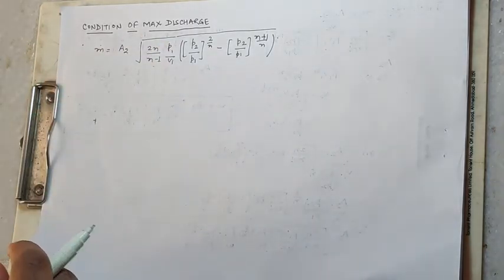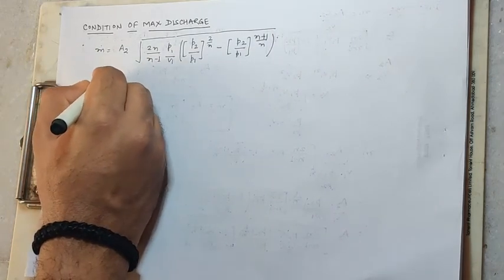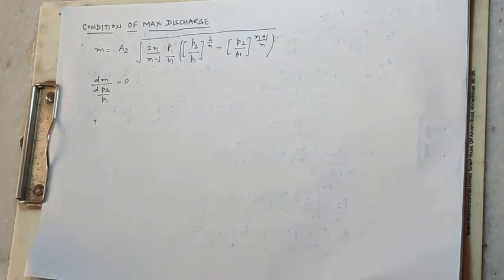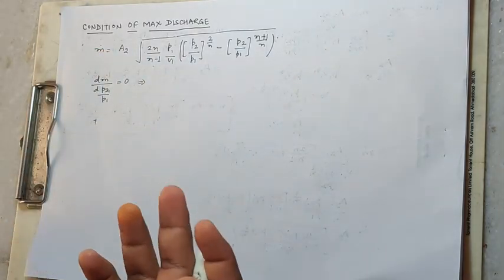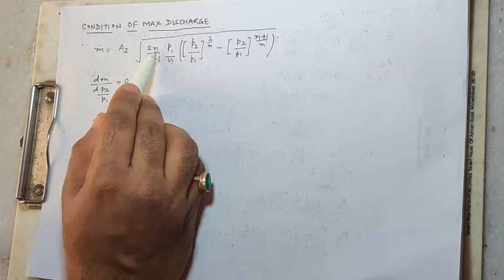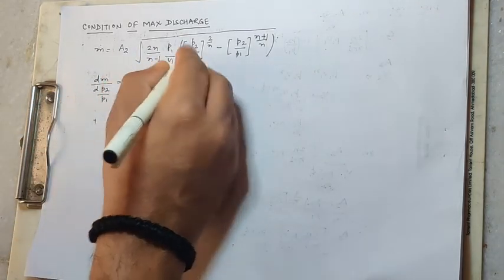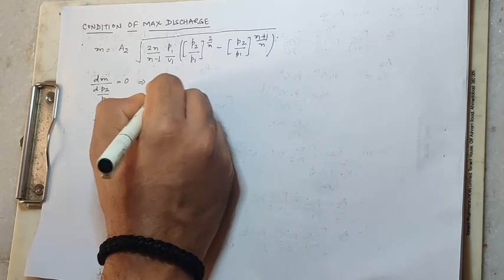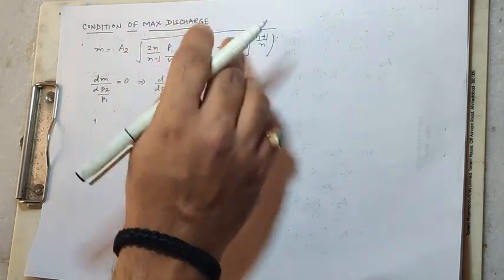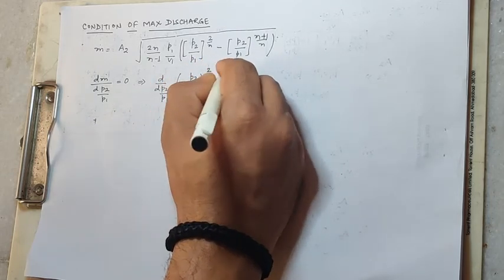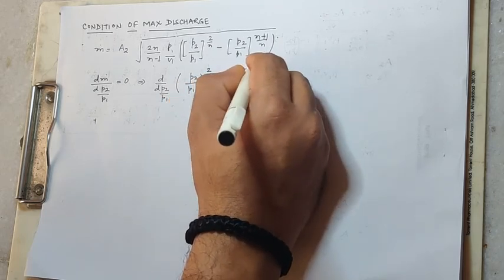Now we have the condition of maximum discharge. We have to put the mass flow rate with respect to the pressure ratio and set it equal to zero. Here we have the condition of maximum discharge, and we have to differentiate this. We know that A2 is the throat area — constant. N is constant. P1 and V1 are constant. So this is the simplified form: P2/P1 to the power 2/N minus P2/P1 to the power (N+1)/N.